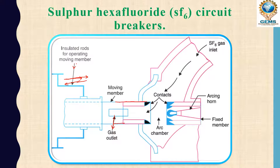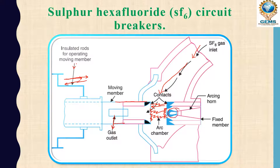This is the SF6 gas inlet. These two are the contacts - this is the fixed contact and this is the movable contact. When a fault occurs, the movable contact moves back. Then an arc is struck between the two contacts. To extinguish this arc, gas flows in from above through the inlet into the arc chamber. This is the arcing horn, which is used to control and protect against the arc.